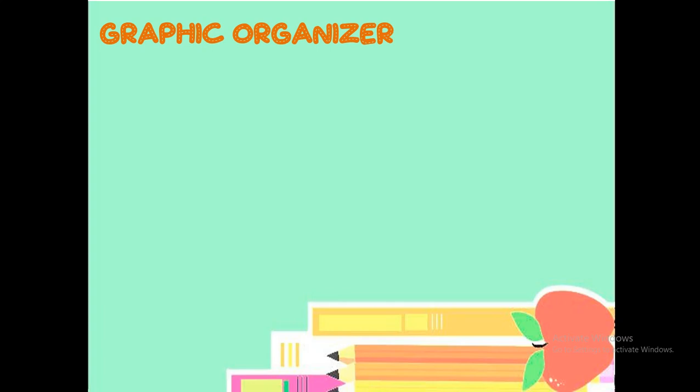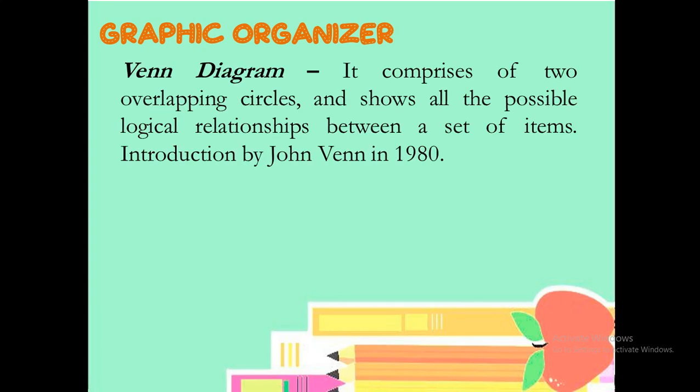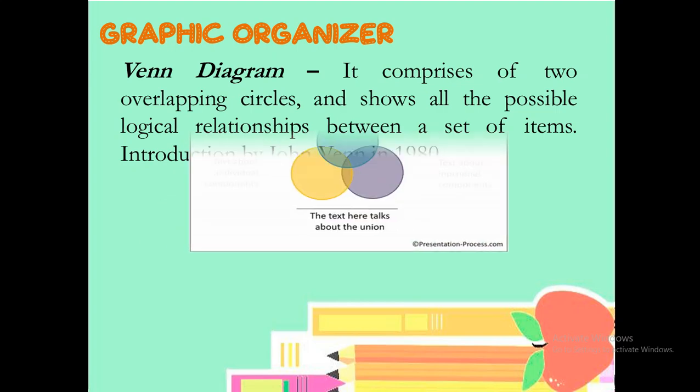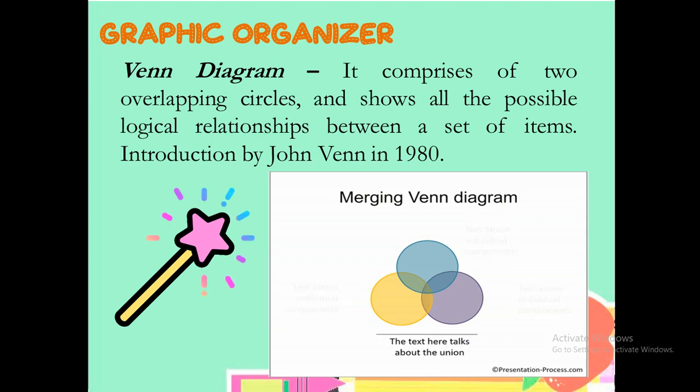Let's start. The first example of graphic organizer would be the Venn diagram. Venn diagram, the most common. Usually, we use this in discussion or your presentation to your teachers, particularly in English, Filipino, Araling Panlipunan, and ESP, and somehow in science and other subjects, of course. It comprises of two overlapping circles and shows all the possible logical relationship between a set of items. Introduced to us by Jan Venn in 1980. That's why we call it as Venn diagram, quoted from the surname of Chan Venn, introduced in 1980. The difference of Venn diagrams, not only they are three circles or two circles that you will be using in your presentation, but they usually merge in order to provide another example. Merging will give you the idea of what would be the connection of two circles merged, their similarities, perhaps.